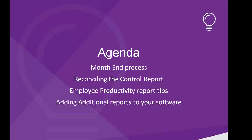Today what we're going to talk about is those reports that you print as part of your month-end process. We'll start off with the first step of the month-end process, which isn't actually related to reports but which we do in order to be able to run our reports. Then we get right into those reports, starting mainly with the Control Report and looking at how we can match that report to all the other reports that we print as part of our month-end process.